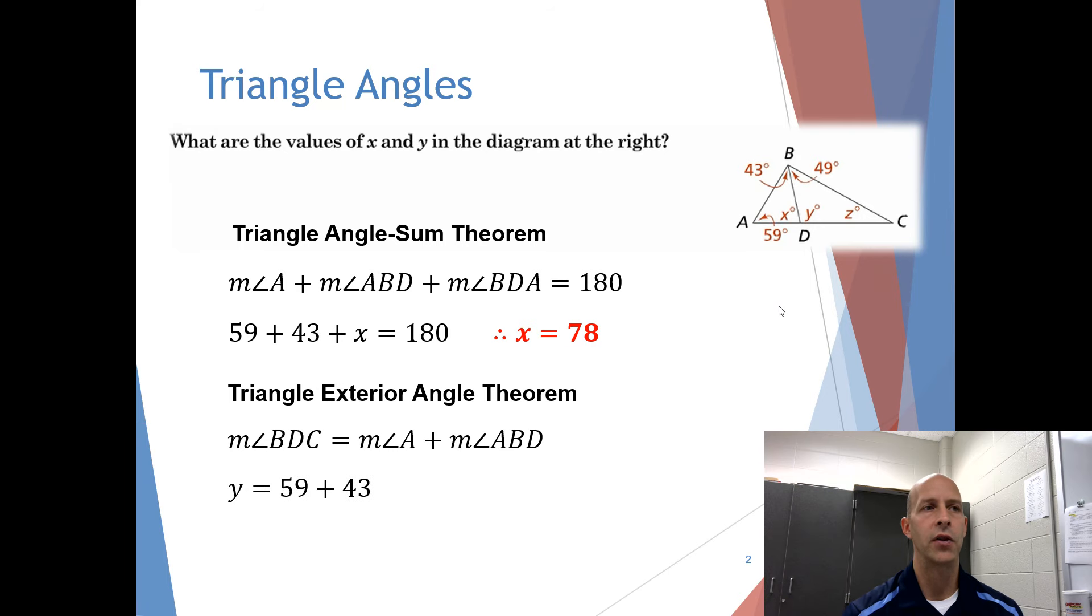We know that the measure of angle BDC in that diagram is y, the measure of angle A is again 59, and the measure of angle ABD is 43, so we just need to add those two together. Therefore, y is equal to 102.